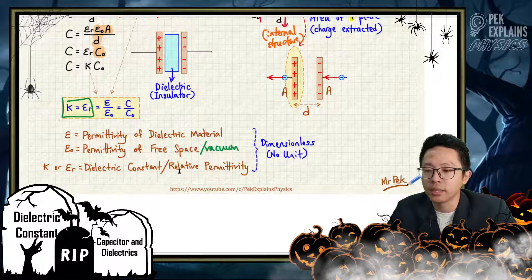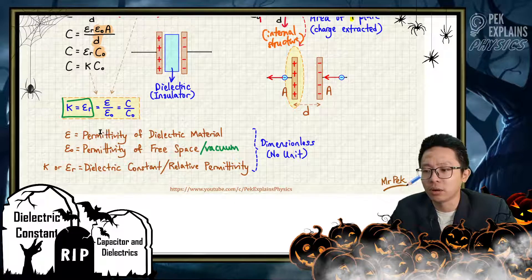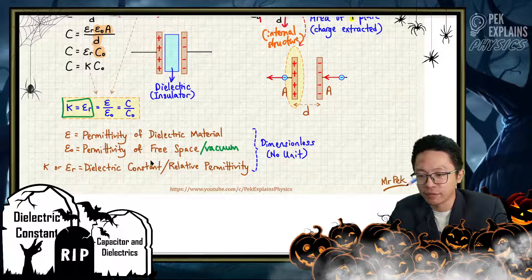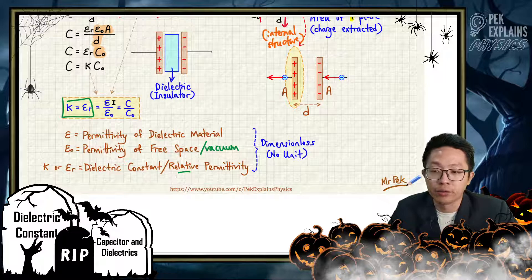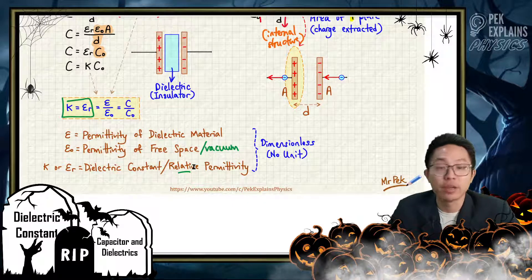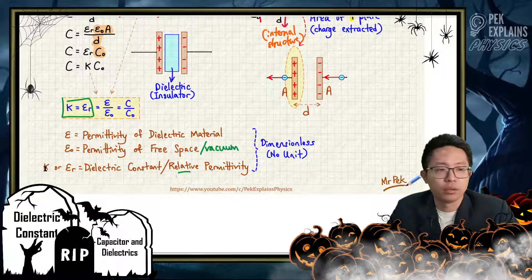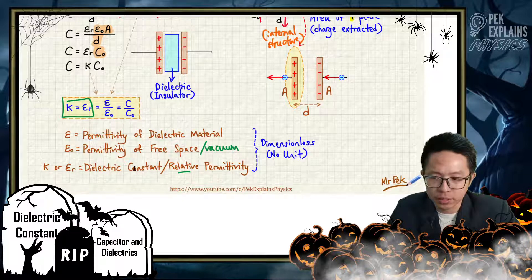That's why we say it as relative — because it's comparing or it's the ratio between ε and ε₀, that is, relative between permittivity of dielectric material over permittivity of free space. So this K or εᵣ has two names which mean the same thing: relative permittivity or dielectric constant. Dielectric constant is relative permittivity, and relative permittivity is dielectric constant.